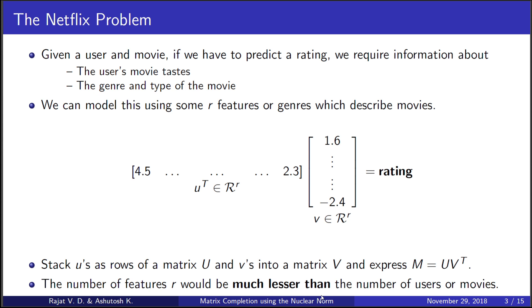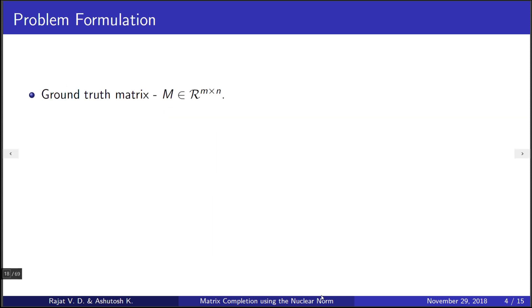Now let us mathematically formalize this problem. There exists some ground truth matrix M of order m cross n whose samples are available to us in matrix X.